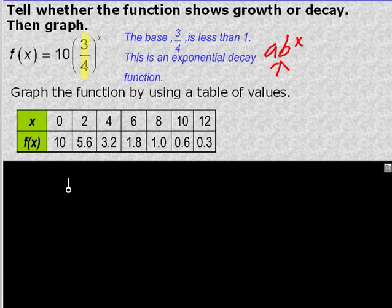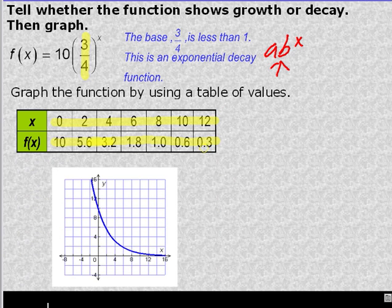They actually didn't choose any negative values. I would have chosen negative values. But what you see here is as it gets bigger, y gets smaller. So x to the 12th gives you a smaller number. And it's just going to continue to get smaller. So you're going to plot those points. They actually stop here, which I would have continued to get some of my negative values.